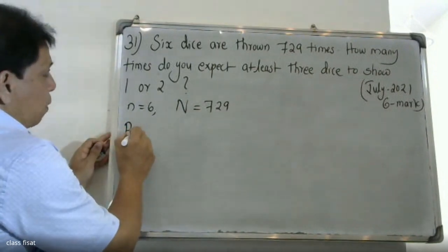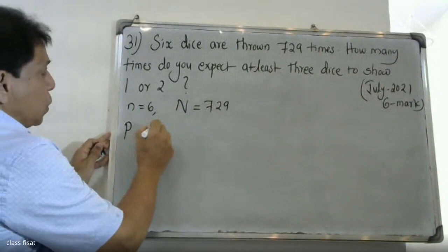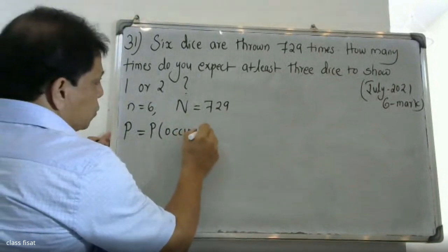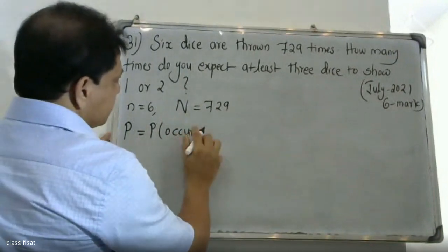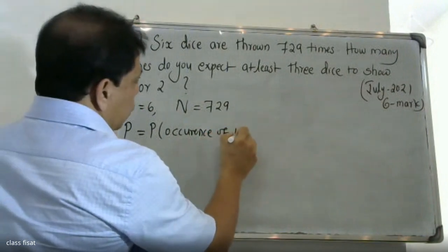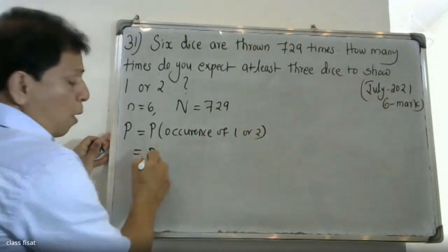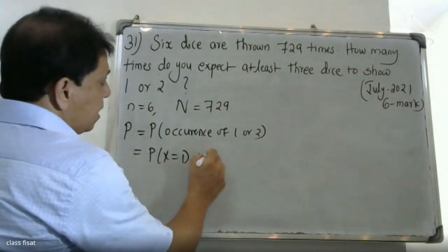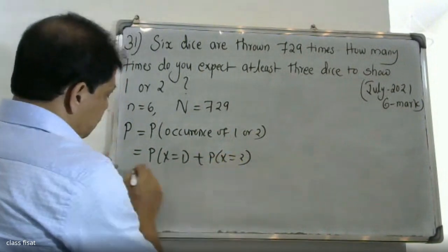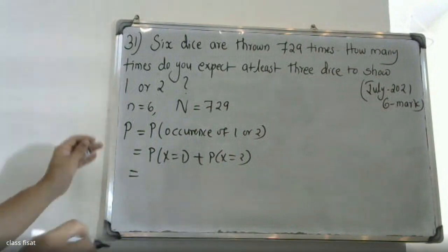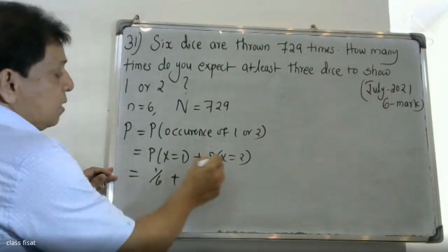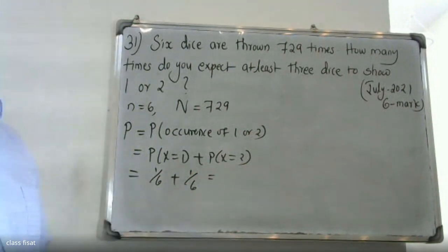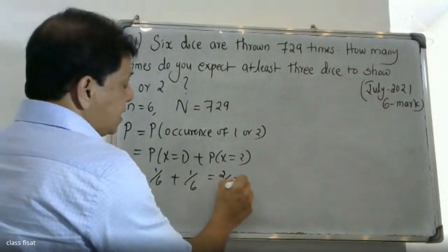For probability of success, P is equal to the occurrence of one or two. Probability of occurrence of one or two equals P(X=1) plus P(X=2), which is 1/6 plus 1/6, giving us 2/6. That is equal to 1/3.